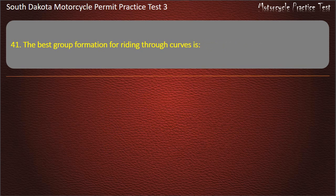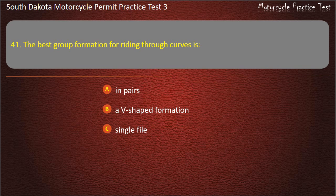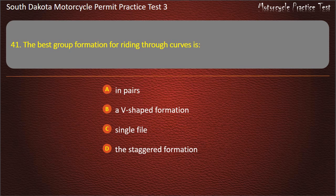Question 41: The best group formation for riding through curves is: In pairs; A V-shaped formation; Single file; The staggered formation. Answer: Single file.